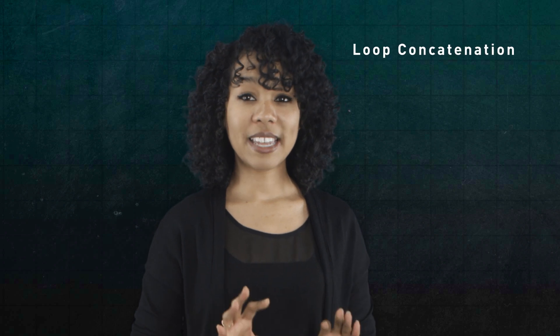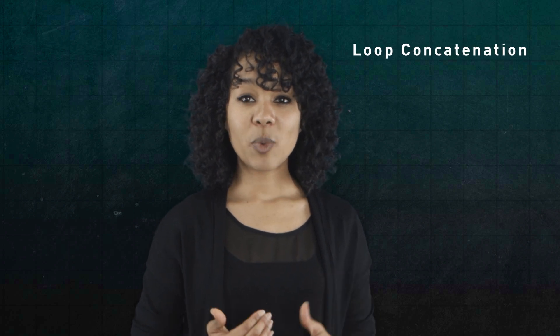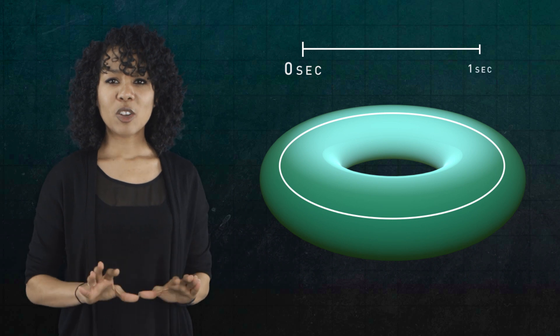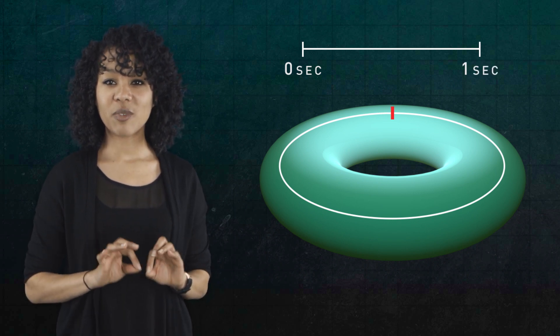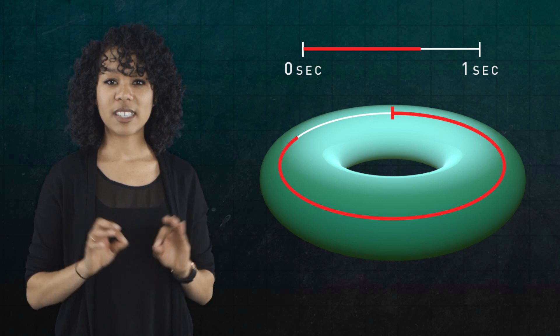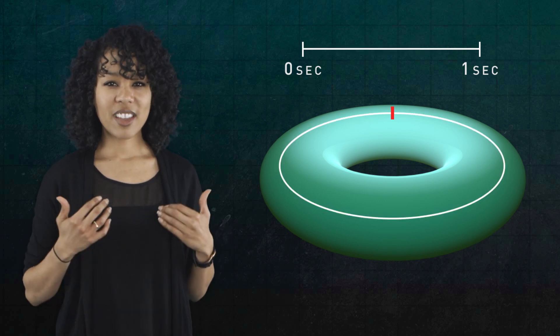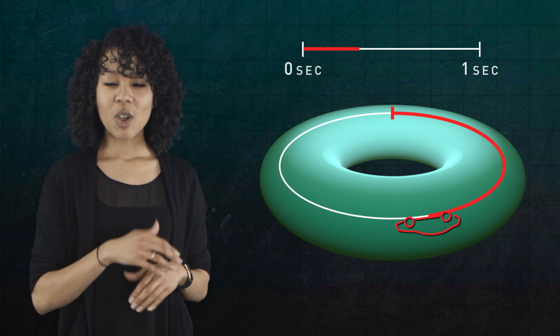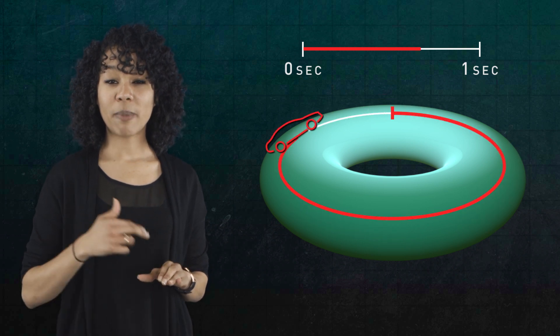We looked at a type of multiplication from topology called loop concatenation, and we discovered a way to multiply loops in a topological space. A loop is a continuous function from the interval of length one into a topological space that sends zero and one to the same point. Intuitively, we can think of a car driving along some path, where at the end of one second, the car goes back to where it started.